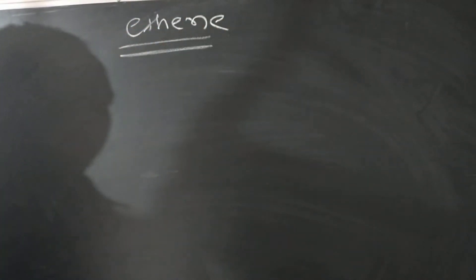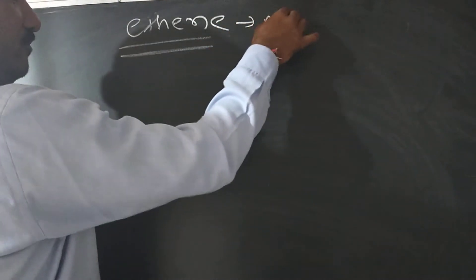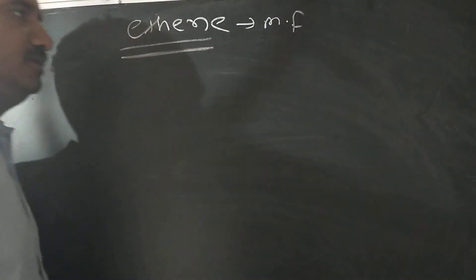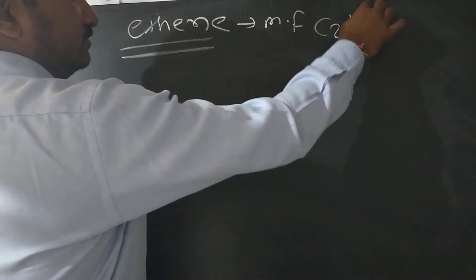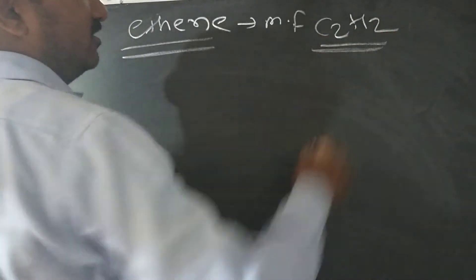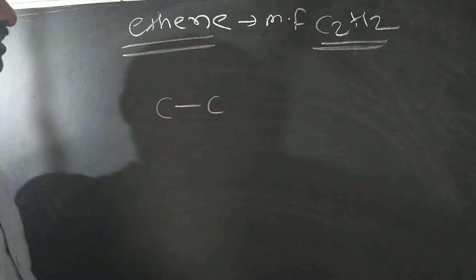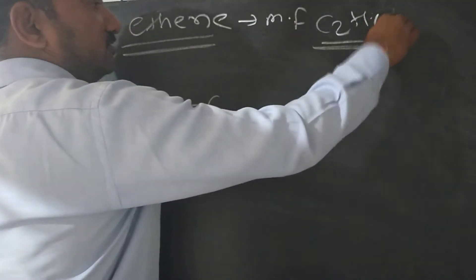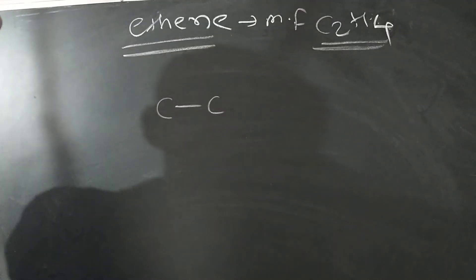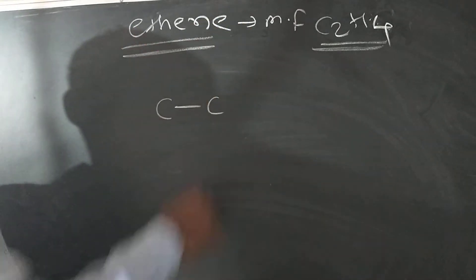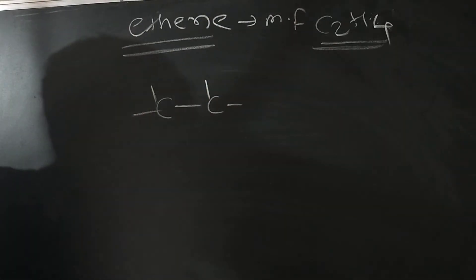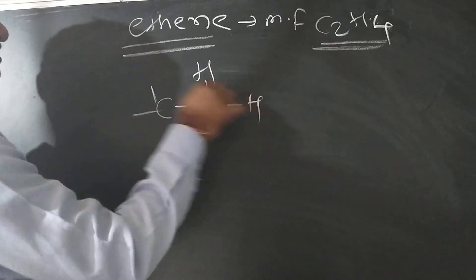Now consider the next example: ethylene, also written as ethene. The molecular formula of ethylene — sorry, C2H4, not C2H2. C2H4: there are two carbons and four hydrogens. To write the structural formula, write the first carbon, attach the two carbons, and place one hydrogen here, one here, one here, and one here.